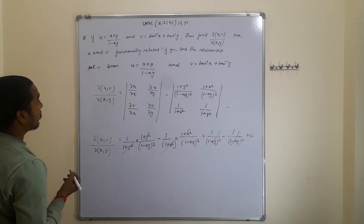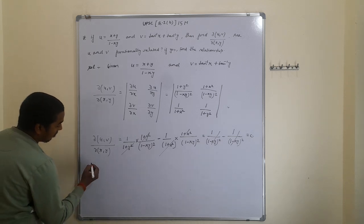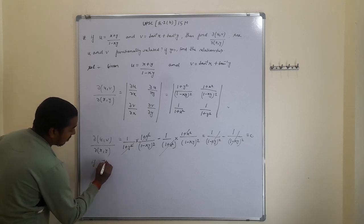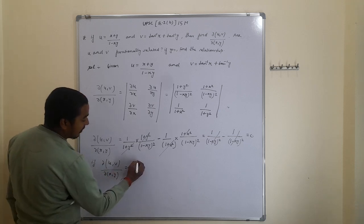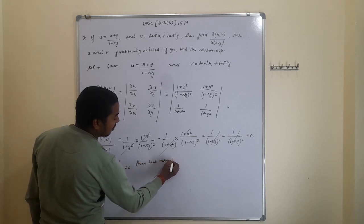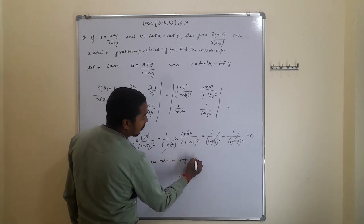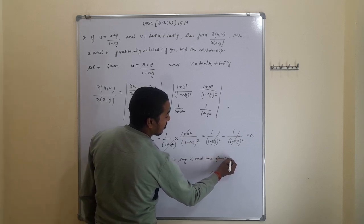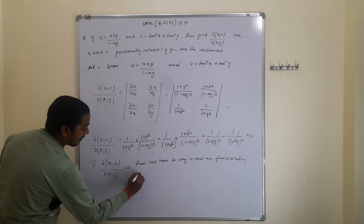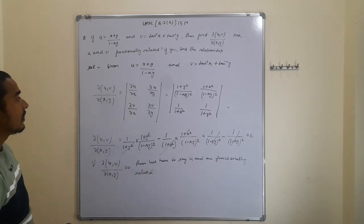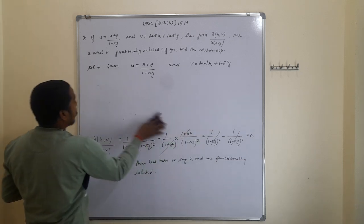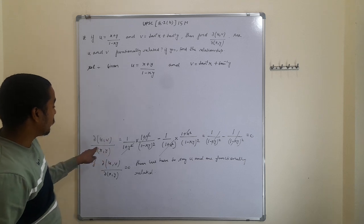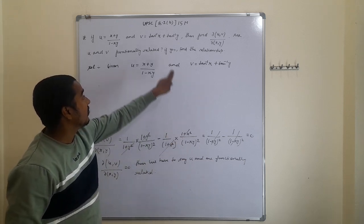When the Jacobian is zero, we conclude that u and v are functionally related. Since ∂(u,v)/∂(x,y) = 0, u and v are functionally related. We now need to find the relationship between them.